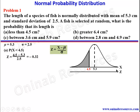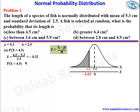We then bring in the z-axis. The mean point is 0, and to the left — since it is negative 0.32 — we have it here. Negative 0.32 is the z-score for 4.5 centimeters. So the probability of x less than 4.5 is equal to the probability of z less than negative 0.32.